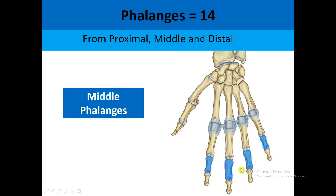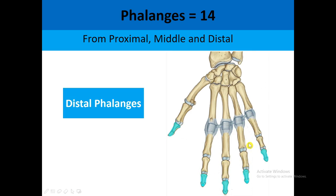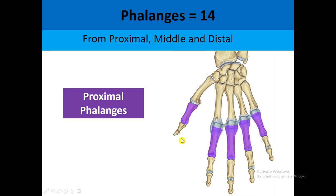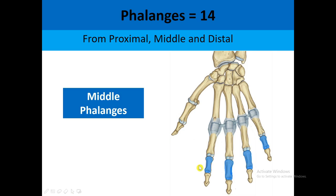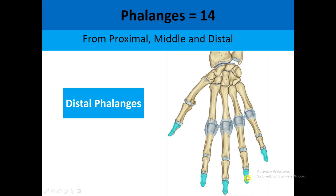The phalanges are the bones making our fingers. We have proximal phalanges, middle phalanges, and distal phalanges. The proximal phalanges are present in all fingers. The middle phalanges are only in the fingers but not in the thumb. The distal phalanges are also in all fingers. In total, we have 14 phalanges in the fingers.